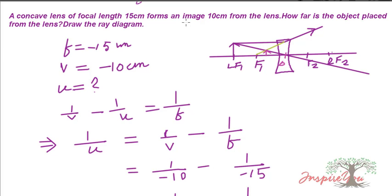For the ray diagram of the concave lens: rays after refraction diverge and appear to come from a point behind the lens. One ray passes through the optical center and goes straight. The image formed by a concave lens is virtual and erect. So the nature of the image is erect and diminished.